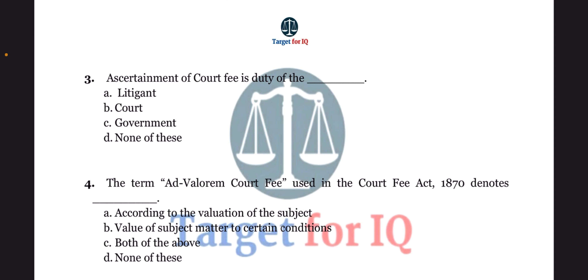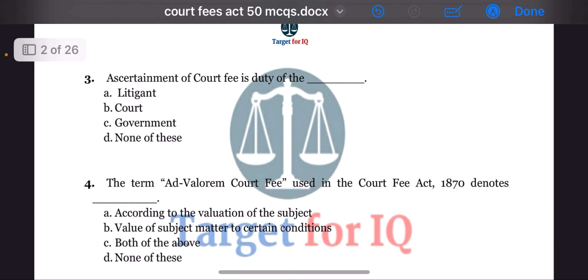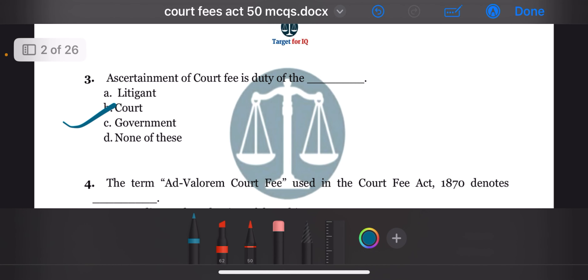Next question: ascertainment of court fee is duty of the dash. The options are A. Litigant, B. Court, C. Government, or D. None of these. The correct answer is option B. Court.